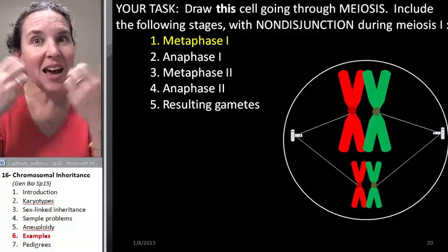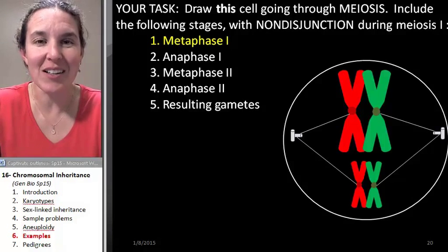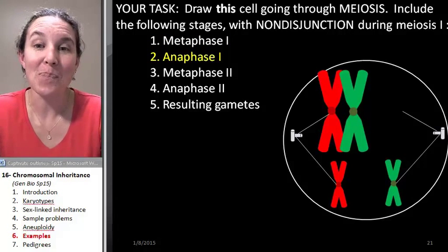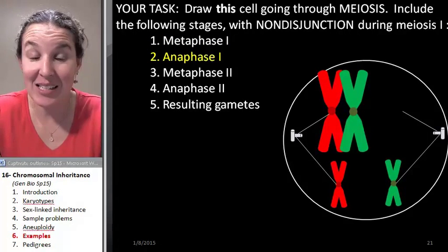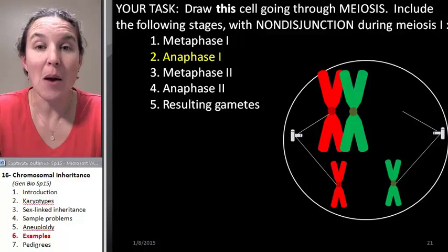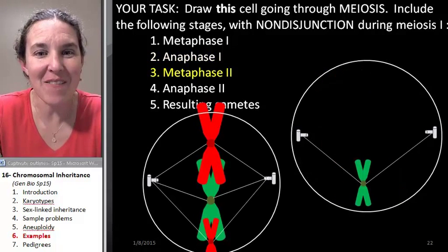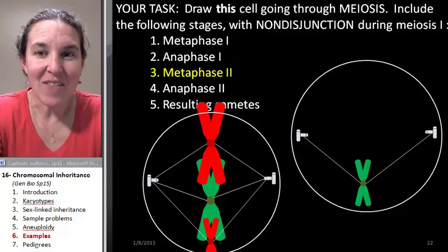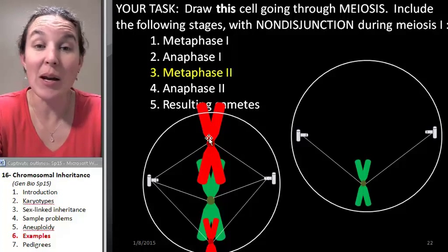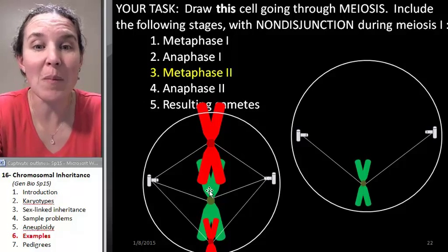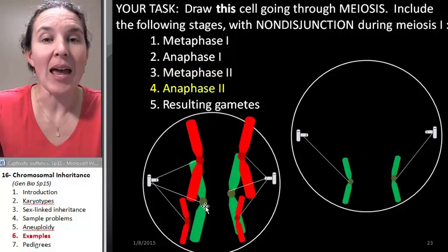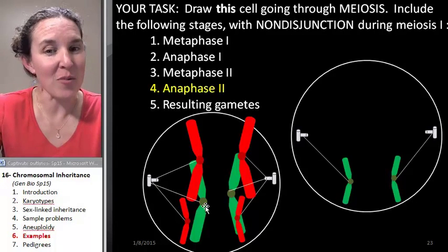That means my homologues are not going to split apart. In anaphase I, look — my big homologues didn't split. That's a mistake. But now look what happens in metaphase II: I've got one cell that only has one chromosome, and one that has three. In metaphase II my sisters are going to split, not the homologues, and in anaphase II the sisters split.